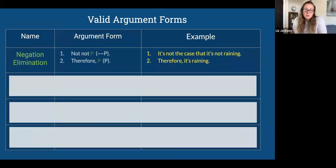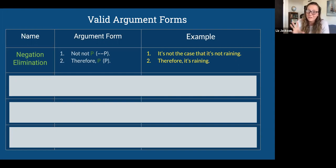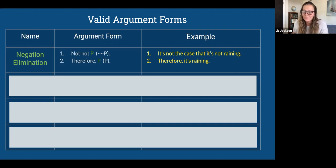Now I want to go over a bunch of valid argument forms, and throw some invalid ones in as well. We're going to go over more valid ones because you want your argument to be valid — you want the premises to support the conclusion. The first is negation elimination: if you have not-not-P, those nots cancel out and you can conclude P. So if it's not the case that it's not raining, you can conclude that it's raining.